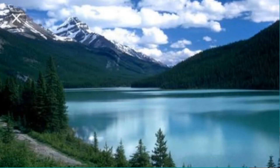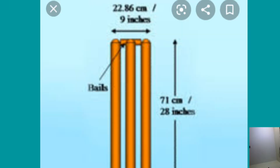Where is Wular Lake situated in India? Wular Lake — India's largest lake — is in Jammu and Kashmir. Next question: what is the height of the three wooden stumps in cricket? The height of cricket stumps is 28 inches.